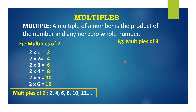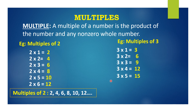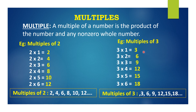In the same manner, let's see one more example — multiples of 3. We have: 3×1=3, 3×2=6, 3×3=9, 3×4=12, 3×5=15, 3×6=18. So the multiples of 3 are 3, 6, 9, 12, 15, 18 and so on.